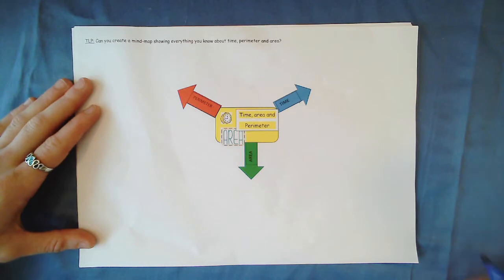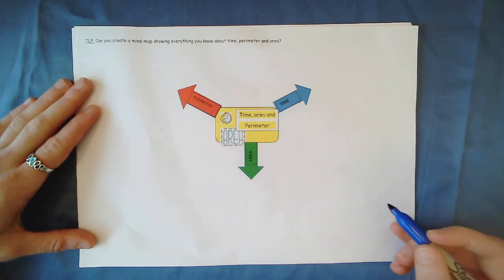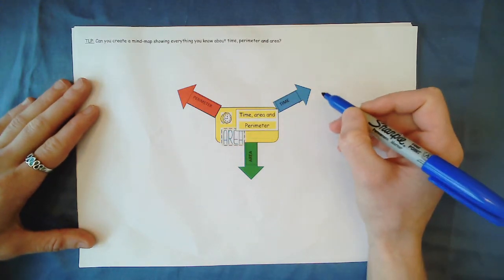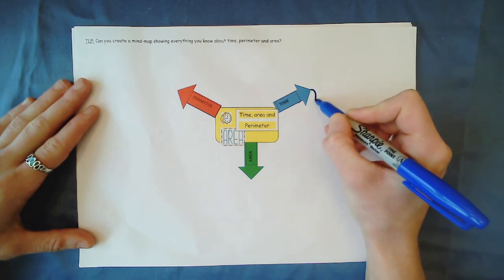Okay Year 4 so we should be starting with something that looks like this and now we're going to add to our different sections so let's start with time. Now what can we think of that we know about time?